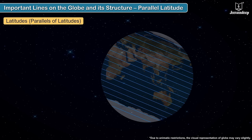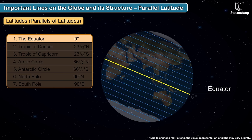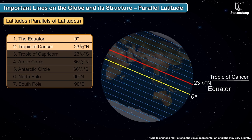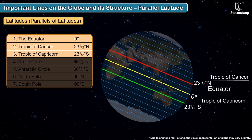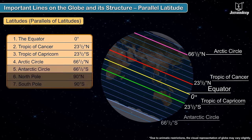Special parallels of latitude include: the equator at 0 degrees, the Tropic of Cancer at 23 and a half degrees north, the Tropic of Capricorn at 23 and a half degrees south, and the Antarctic Circle at 66 and a half degrees south.